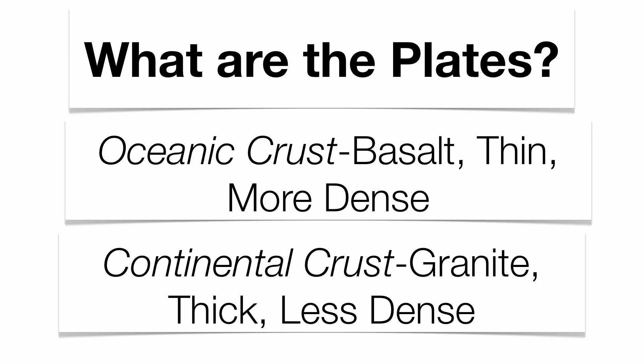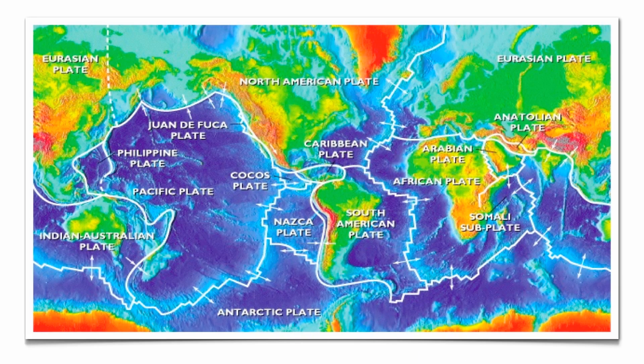Definitely know your characteristics between the two. They can actually be found on page 10 in your reference table in the inferred properties of the Earth's interior chart. Those crustal plates are constantly interacting with each other — either crashing together, pulling apart, or sliding side by side. And that's kind of the foundation behind the theory of continental drift.